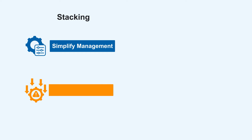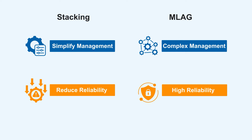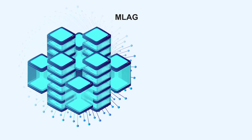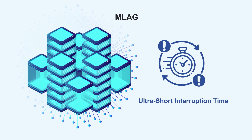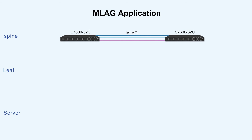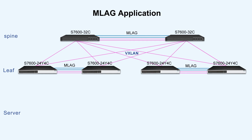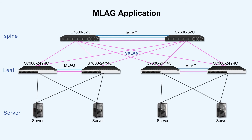Though stacking simplifies management with a single control panel, it reduces reliability. MLag has higher reliability as it has dual control and management panels. During network upgrades, MLag can truly achieve ultra-short interruption time and uninterrupted services without changing the original network architecture. MLag is usually applied to the spine-leaf network architecture and the core/aggregation layer of the three-tier network architecture to provide ultra-high reliability for servers or switches, with separate control panels, an isolated fault domain, and a better ability to balance load across links.